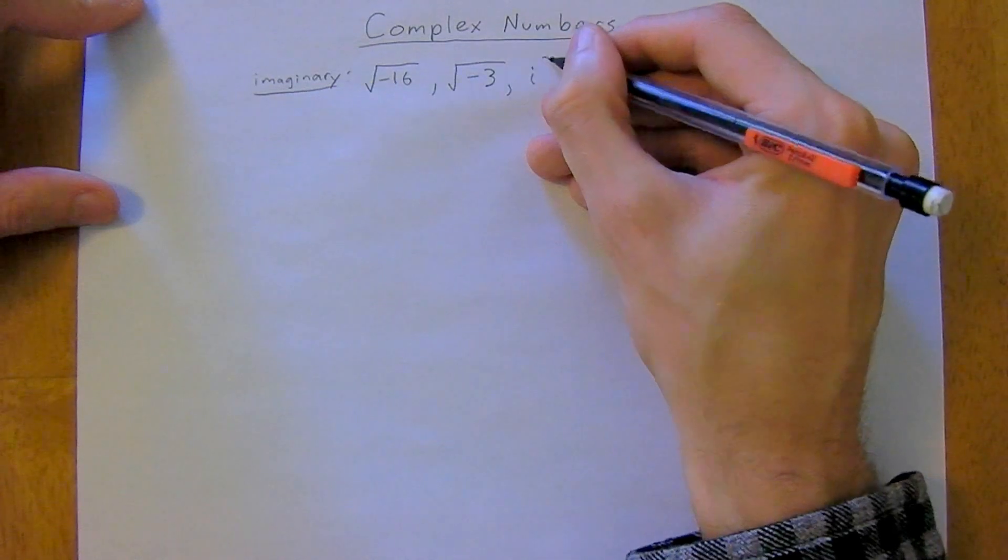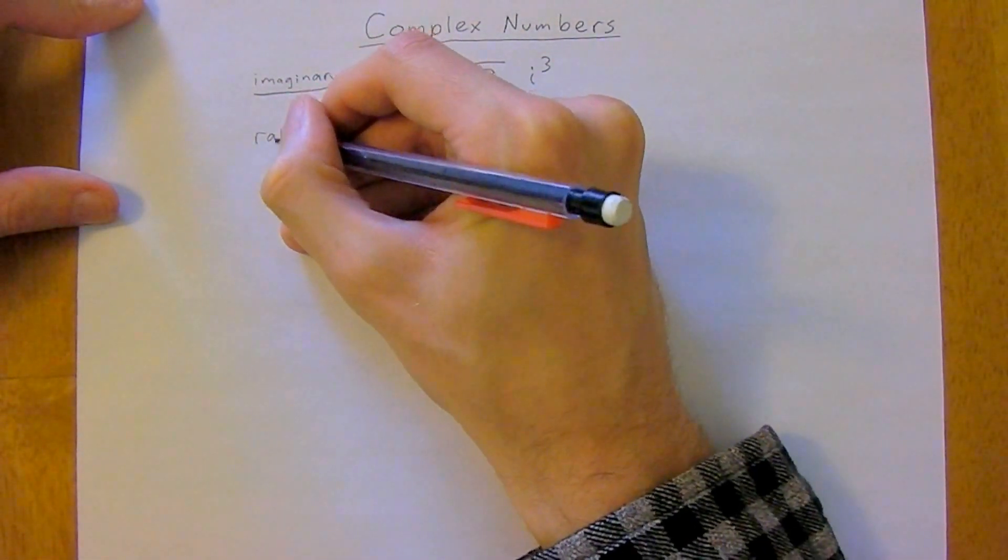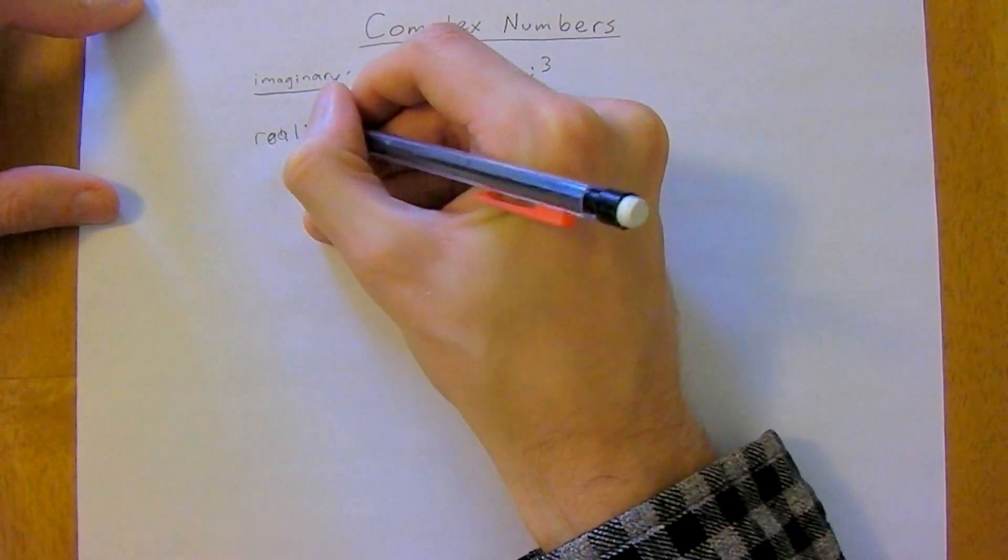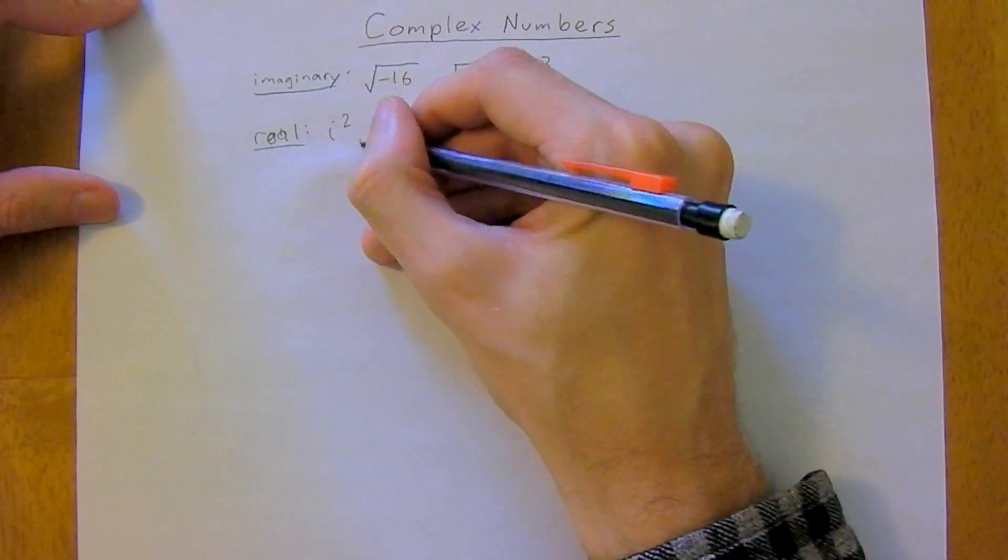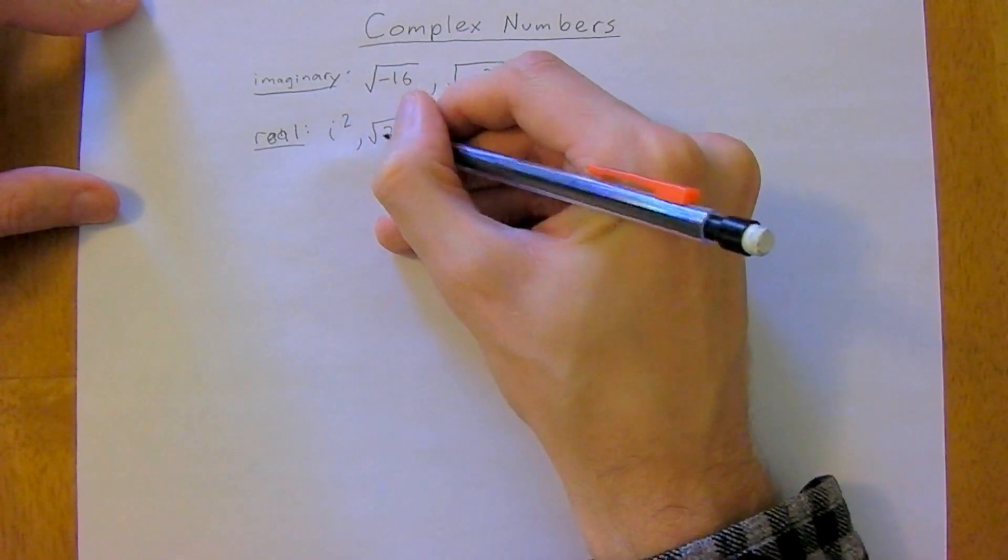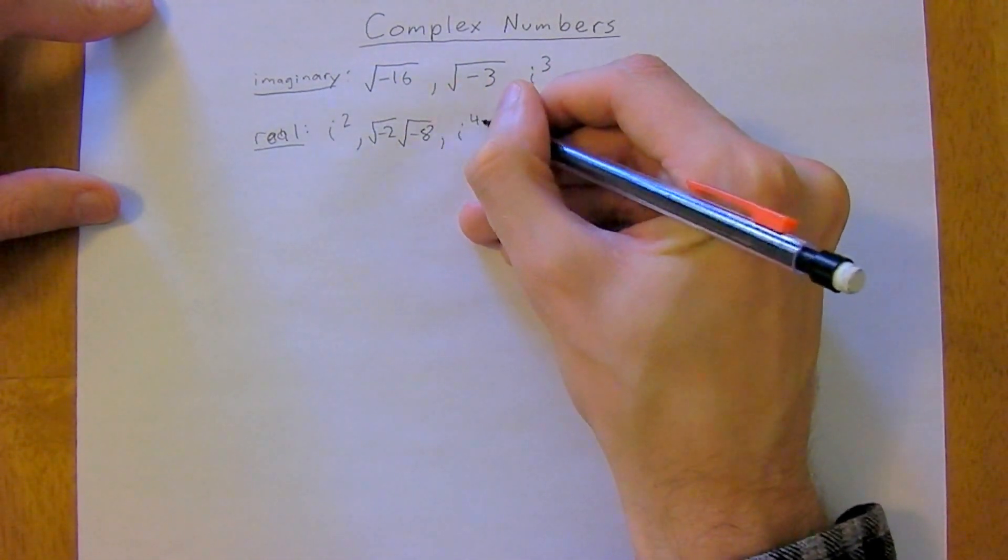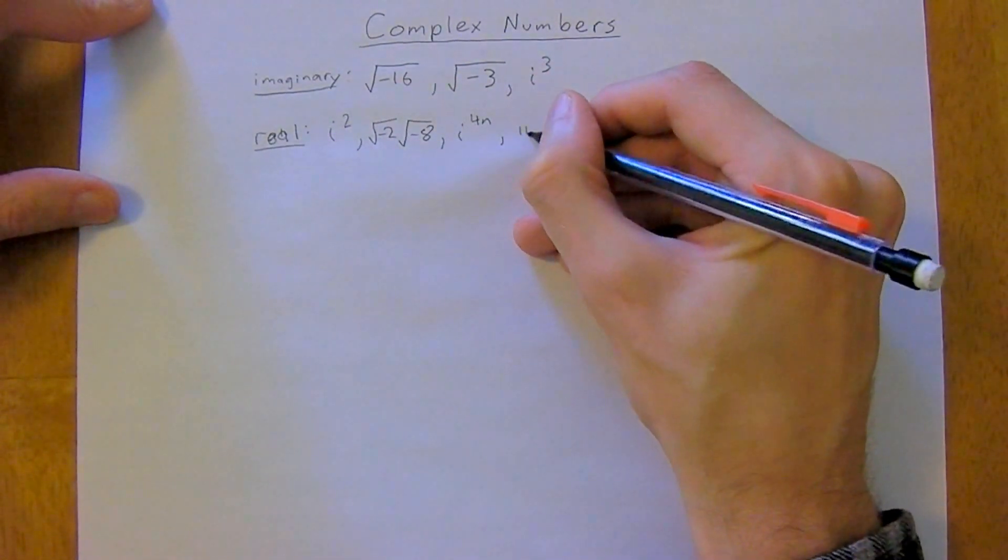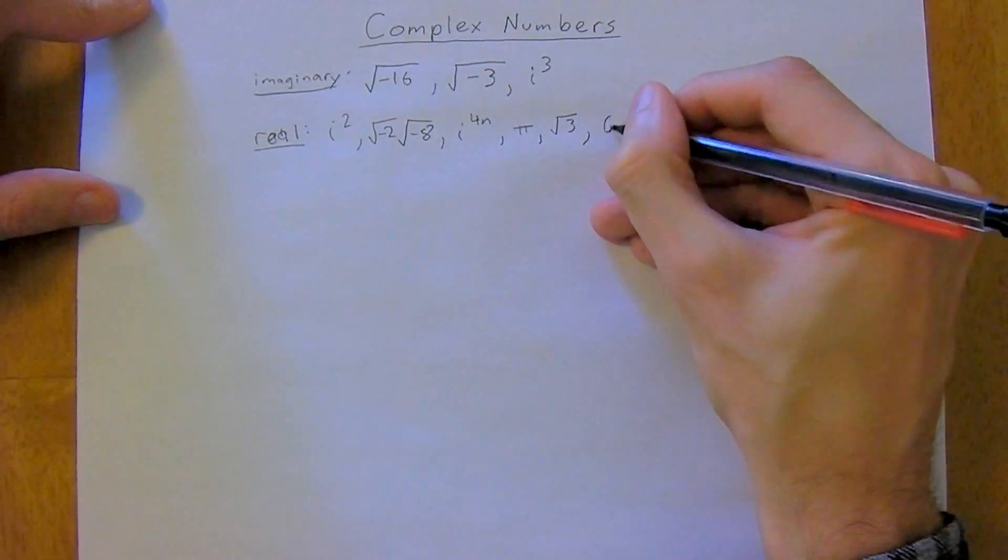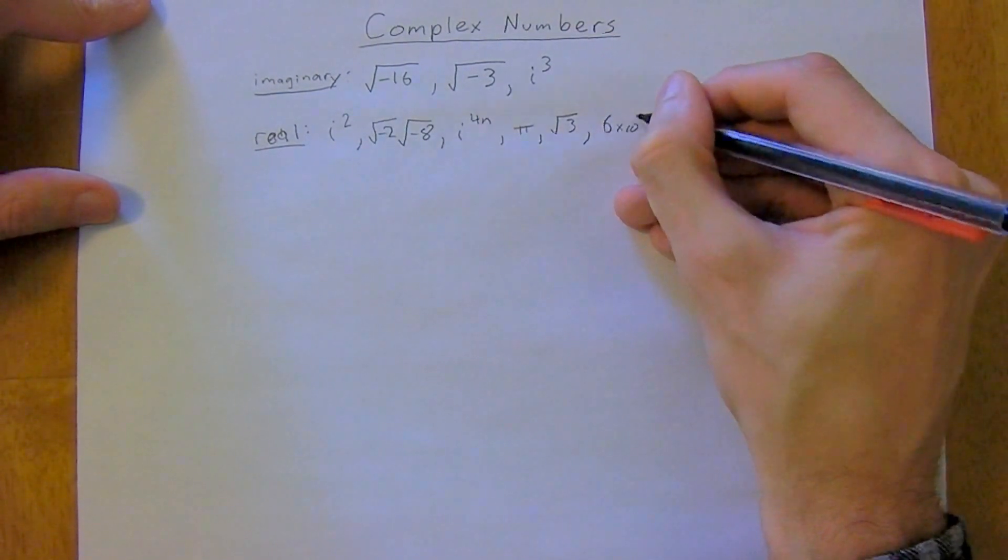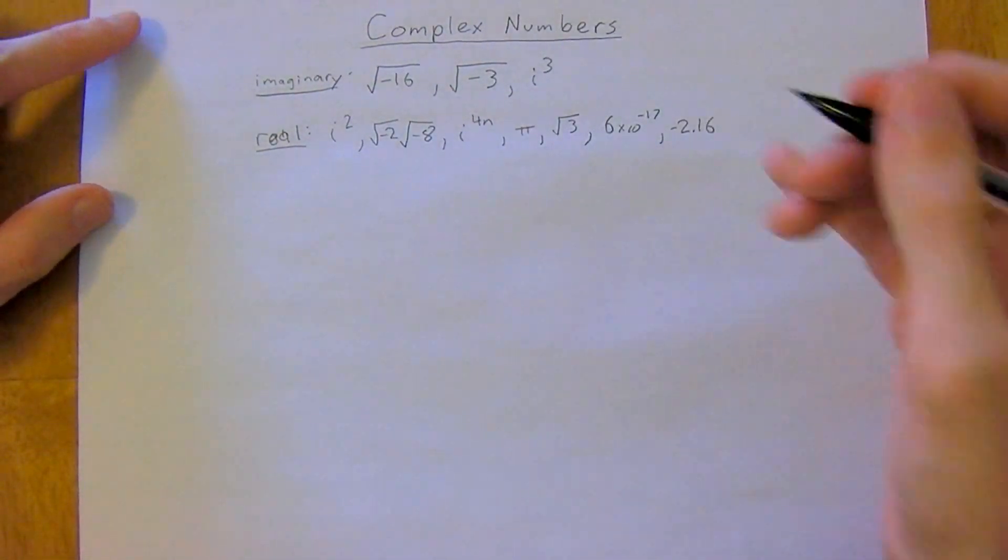And a real number—apparently I can't spell—a real number is like i squared, square root of negative 2 times negative 8, or i to the 4n, or pi is real, or the root of 3, or 6 times 10 to the negative 17. I think you get the point.